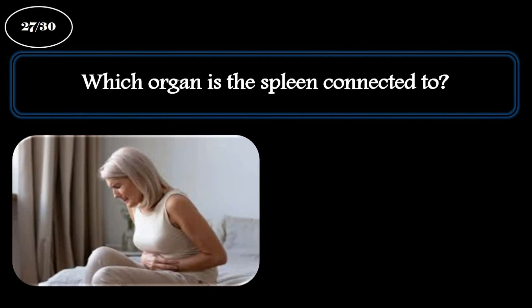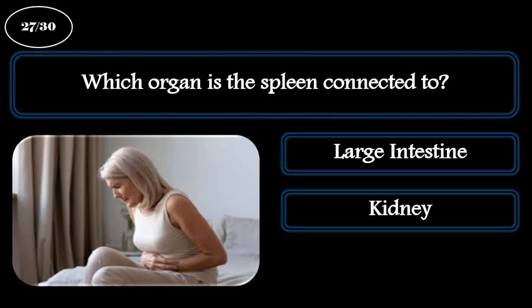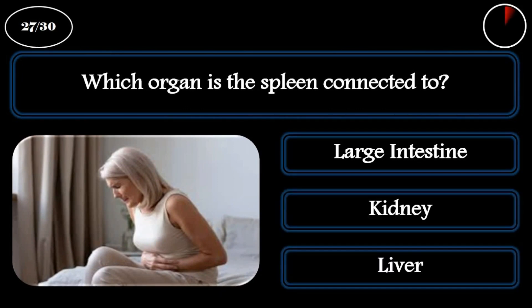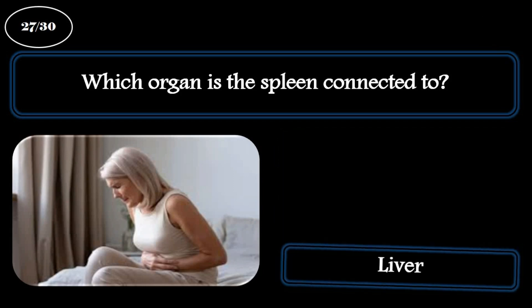Question 27. Which organ is the spleen connected to? A: Large intestine. B: Kidney. C: Liver. The correct answer is liver.